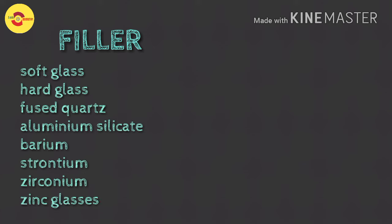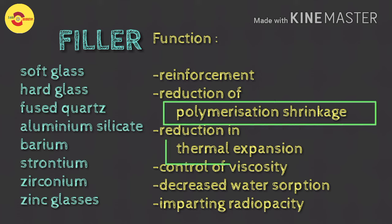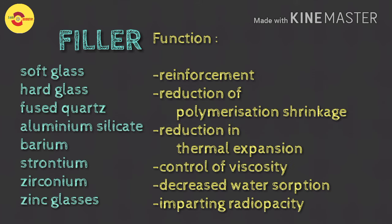Fillers can also be barium, strontium, zirconium, or zinc glasses. The main functions of fillers include: reinforcement, as increased filler loading generally increases physical and mechanical properties of the composite; reduction of polymerization shrinkage or contraction; reduction in thermal expansion and contraction; control of viscosity or workability; decreased water sorption; and imparting radiopacity to the composite. The most commonly used glass filler is barium glass.